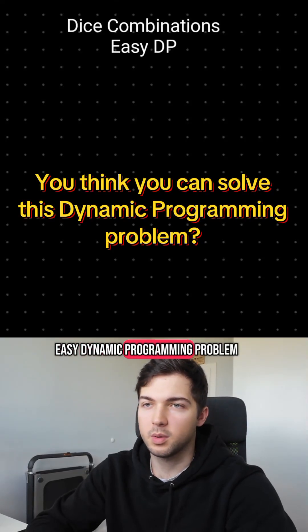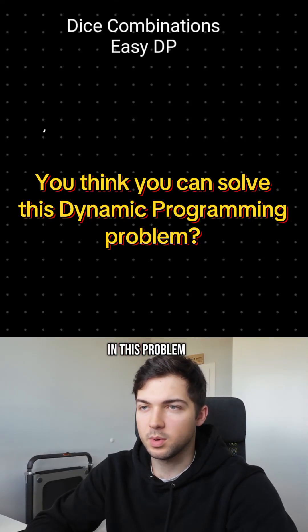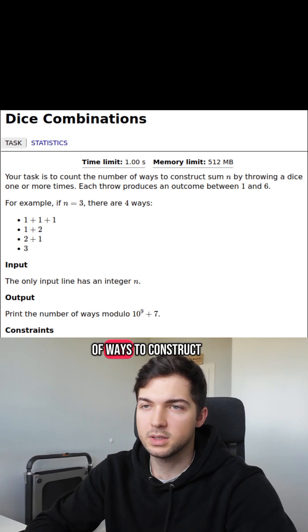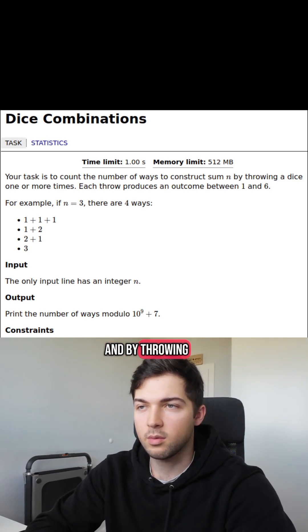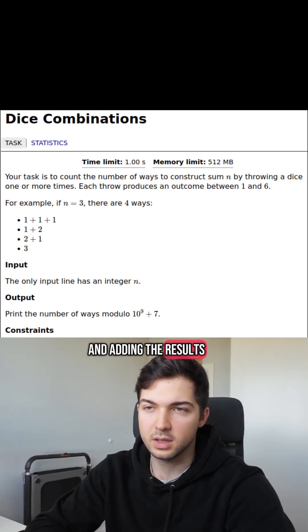Let's solve an easy dynamic programming problem. In this problem we are asked to count the number of ways to construct n by throwing a dice some number of times and adding the results.